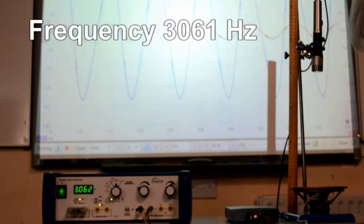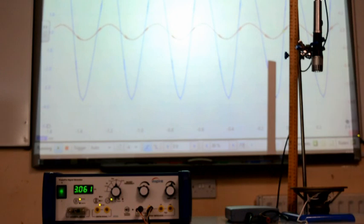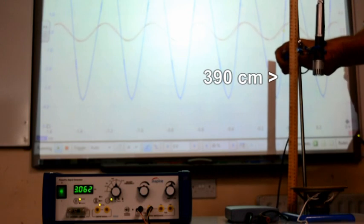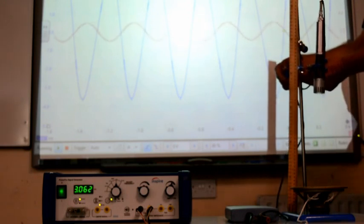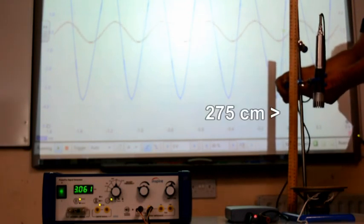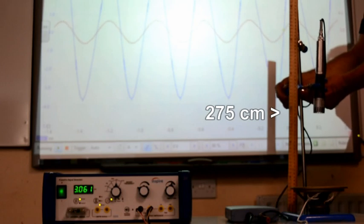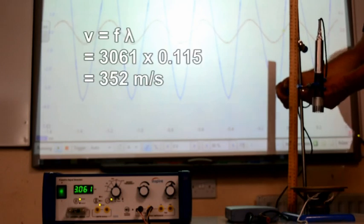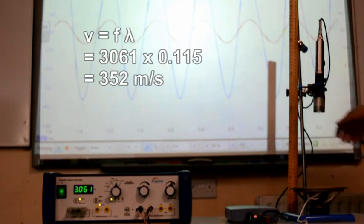At 3061 Hz the microphone moves a much smaller distance. And the speed of sound is found to be 352 m per second.